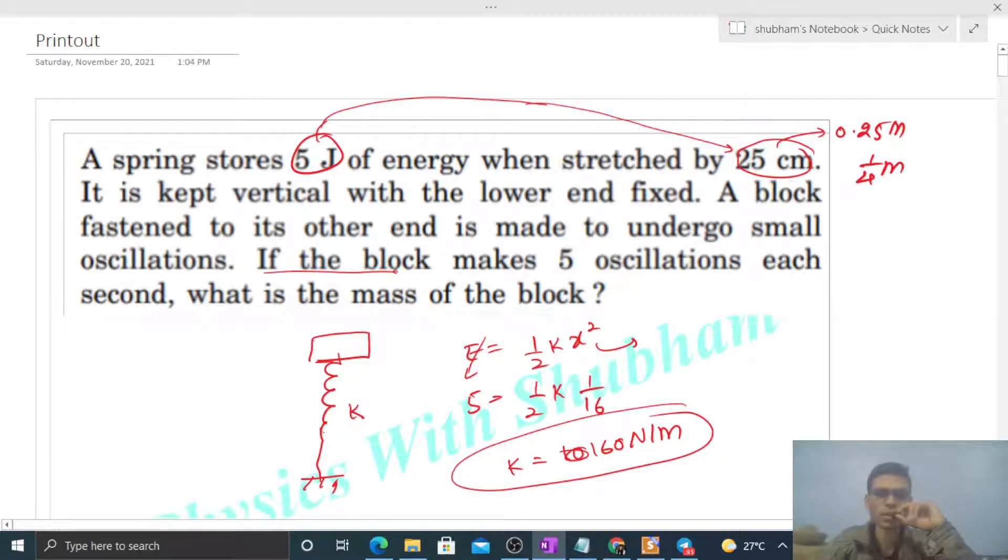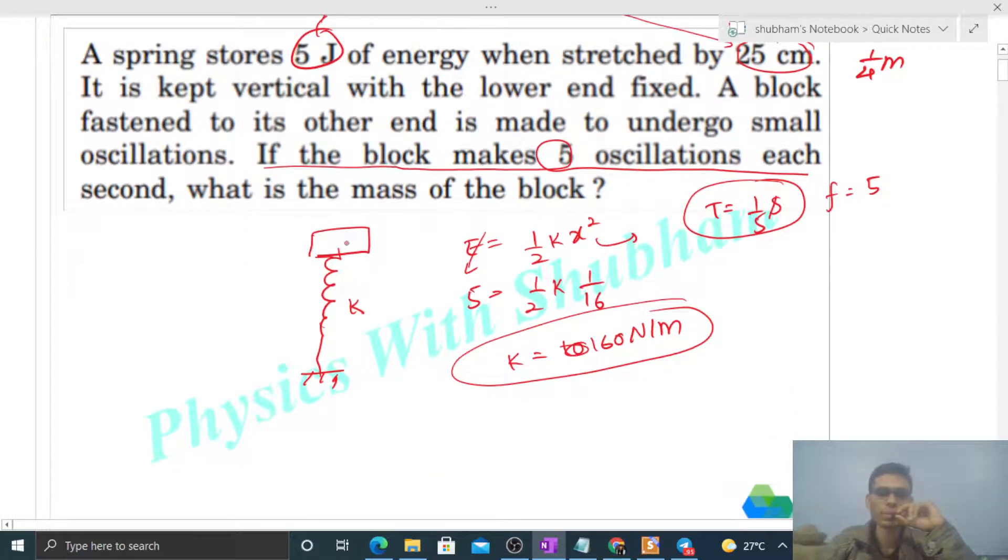The block makes 5 oscillations each second, which means the time period will be 1/5 second. The frequency is 5, so the time period will be 1/5 second.